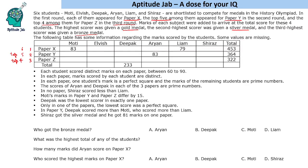The table has some information and some values are missing. Each student scored distinct marks on each paper, between 60 and 90. So in a given paper, all values filled will be distinct. The second condition says that in each paper, marks scored by each student are distinct — meaning all values across the row are also distinct, and all values are in the range 60 to 90.